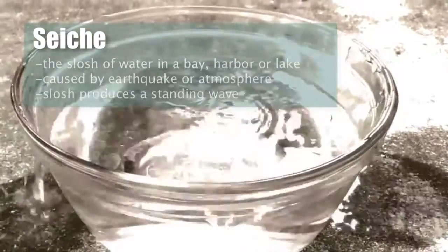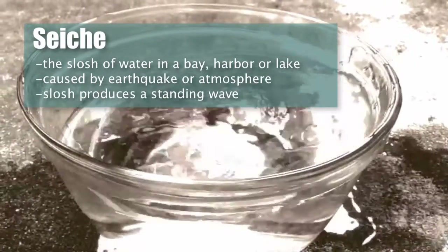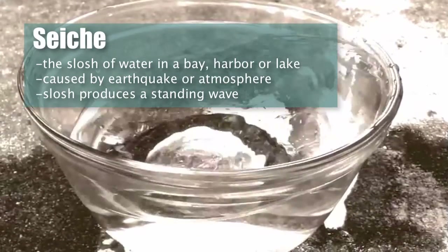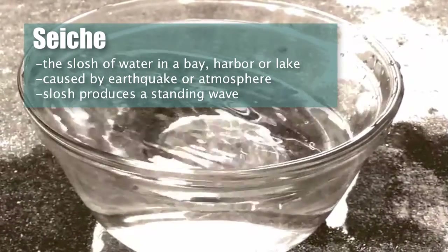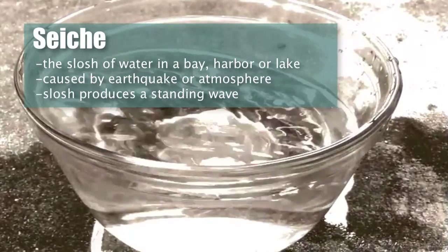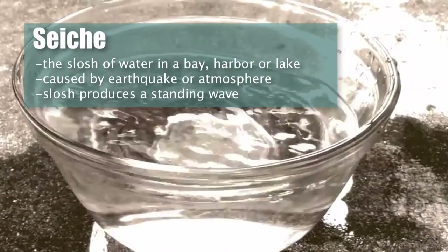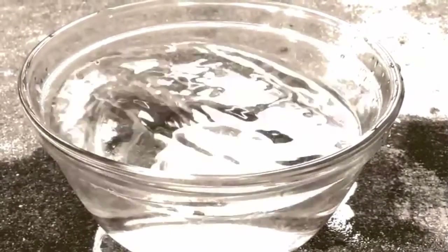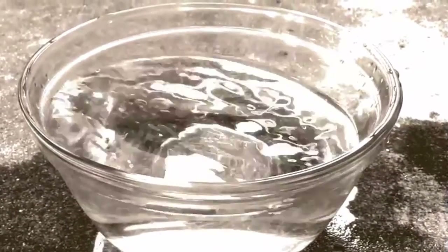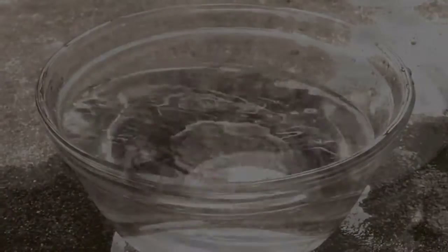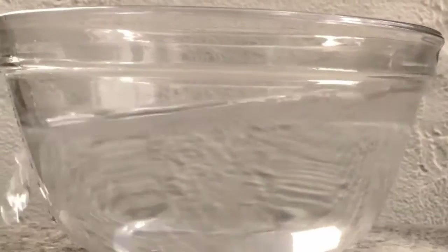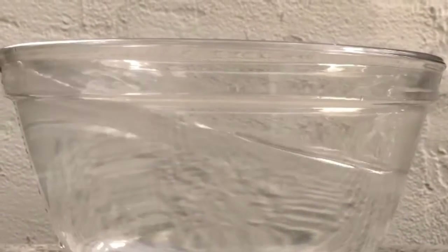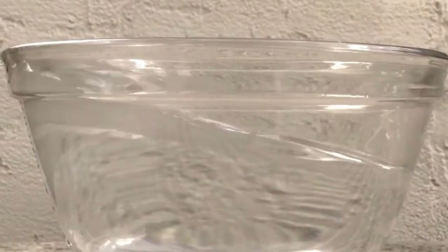Seiche are waves that slosh around in bays or lakes or any relatively enclosed water environment. Seiche is often caused by earthquakes where the frequency of shaking is low enough such that it matches the resonance of the bay and creates a standing wave. Sometimes wind or atmospheric conditions are exactly right, resulting in enough water being pushed against the side of the basin to allow a seiche to form, and this happens in Lake Erie or many other large lakes.